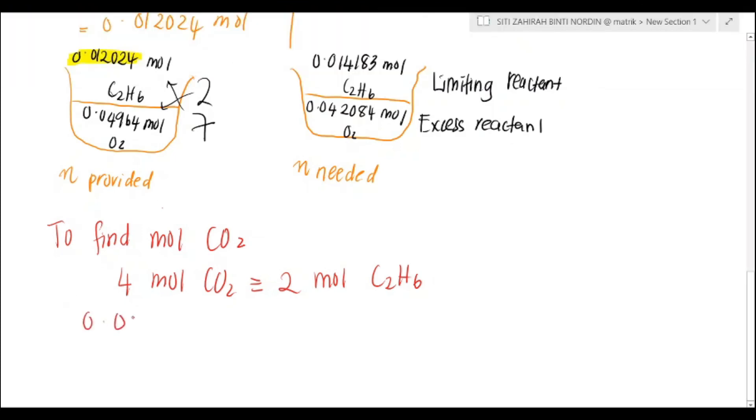From equation, your 2 mol of C2H6 will be 0.012024 mol. So your mol CO2 would be 0.024048 mol.